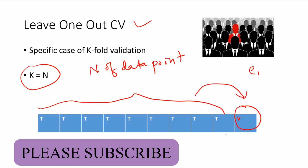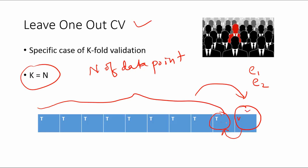Now you change the data point — you just take this one and you will get error 2. When you take this one, you build the model on the entire data including the last one and test your model on this particular data point, and you get error 2. We continue to do the same thing and get error 3. So you will get as many errors as the number of data points — error 1 to error n if you have n observations.